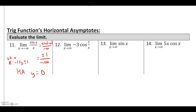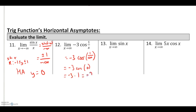For −3·cos(1/x) as x goes to infinity: 1 over infinity is 0, and cosine of 0 is 1. So −3 times 1 equals −3. The horizontal asymptote is y = −3.